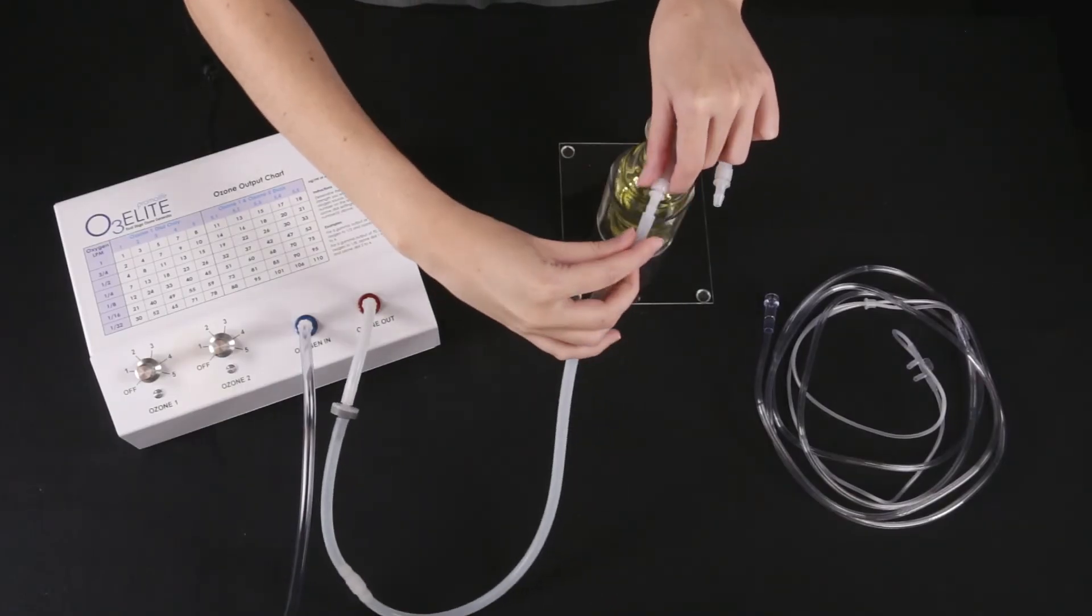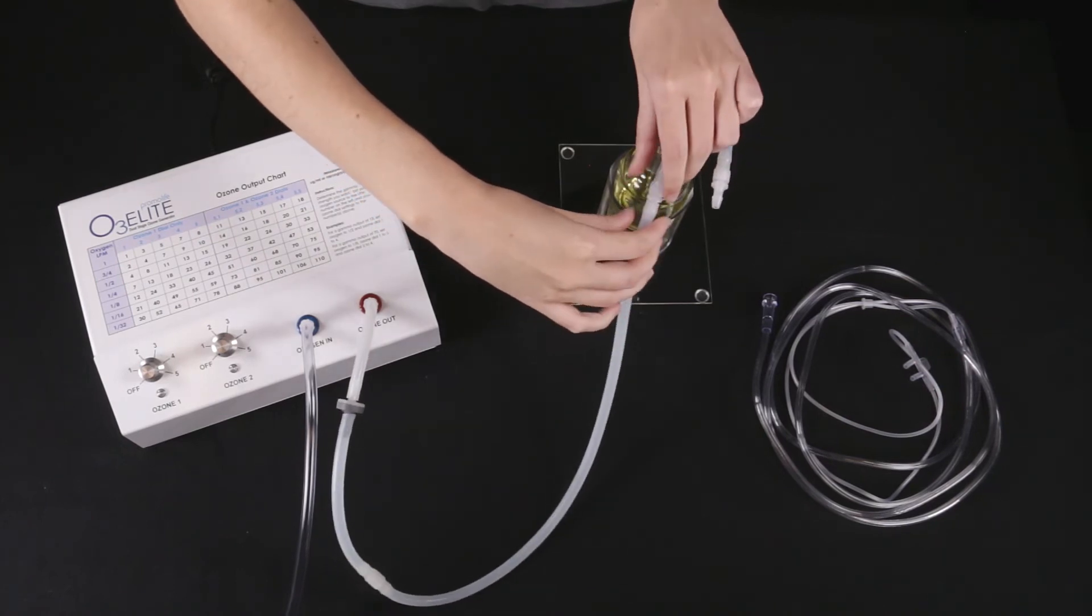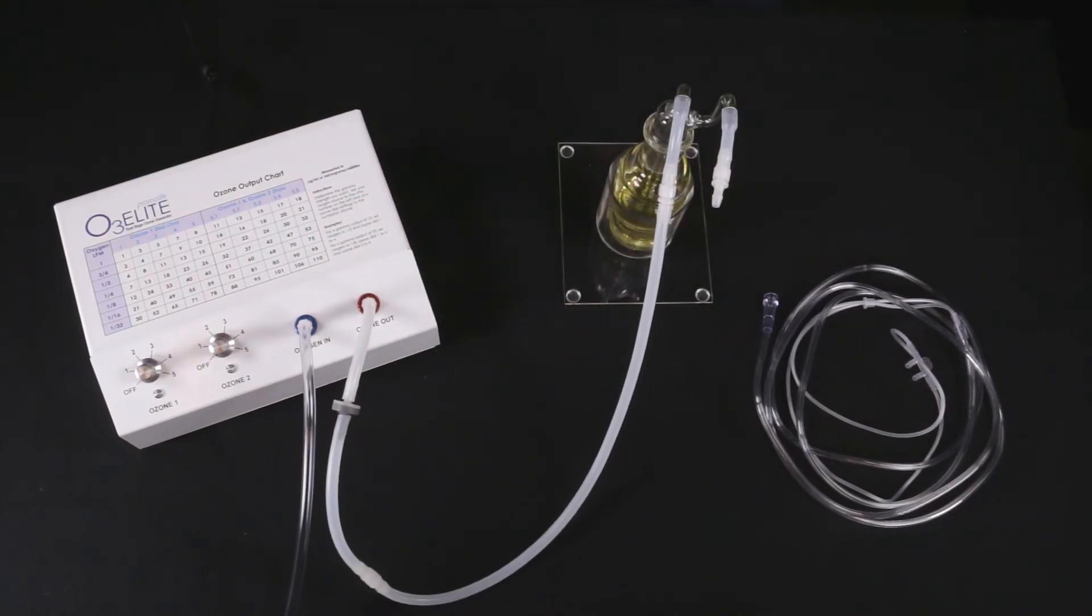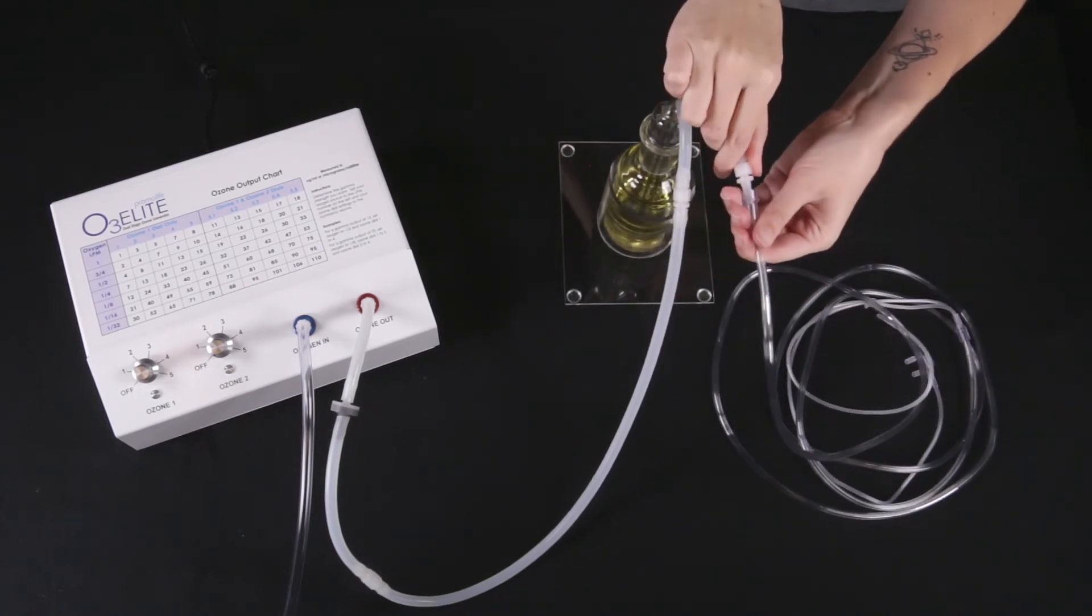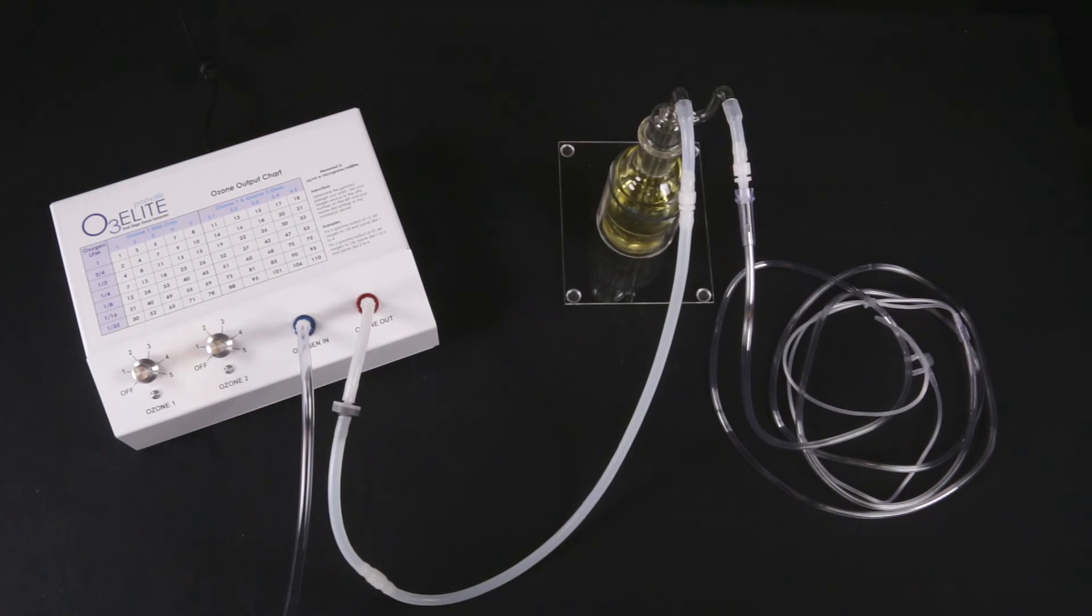Now, attach the other end of the silicone tubing to the oil bubbler's straw that goes all the way into the oil, also called the ozone in-straw, and attach the end of the nasal cannula to the other straw of the oil bubbler, also called the ozone out-straw.